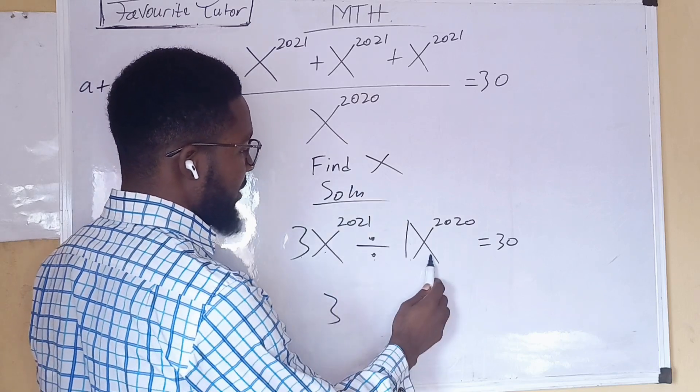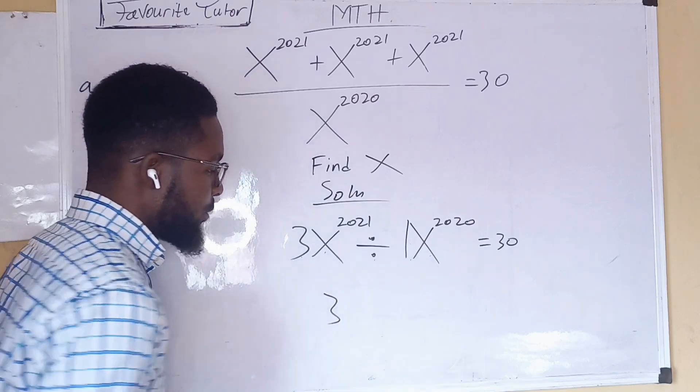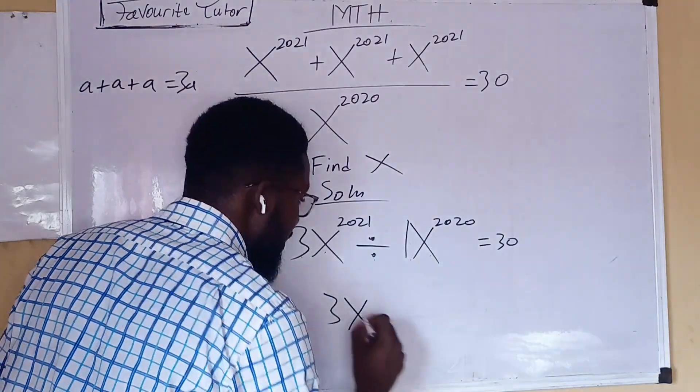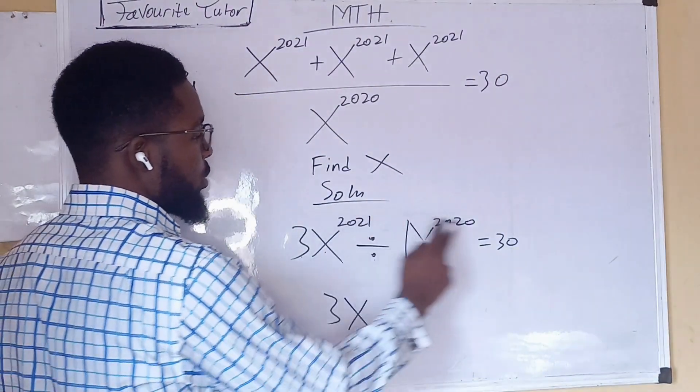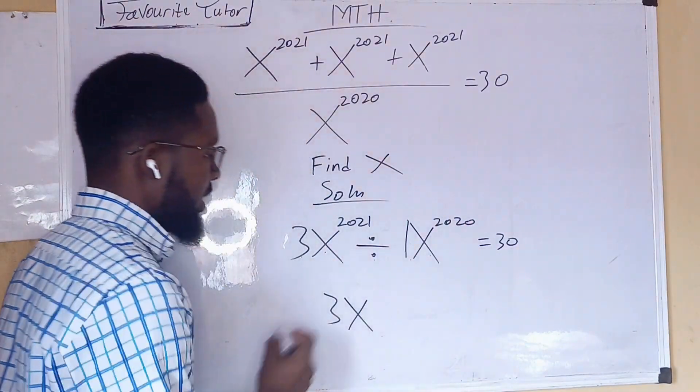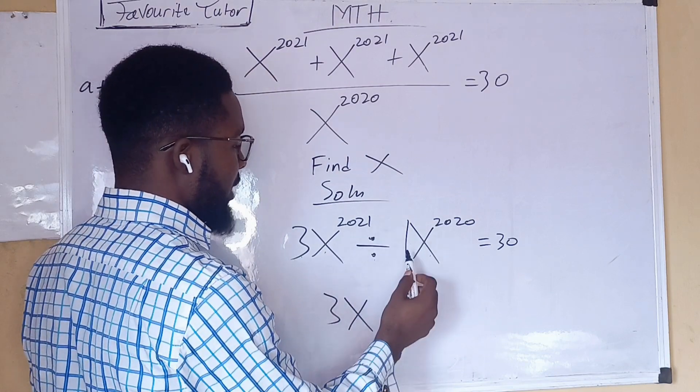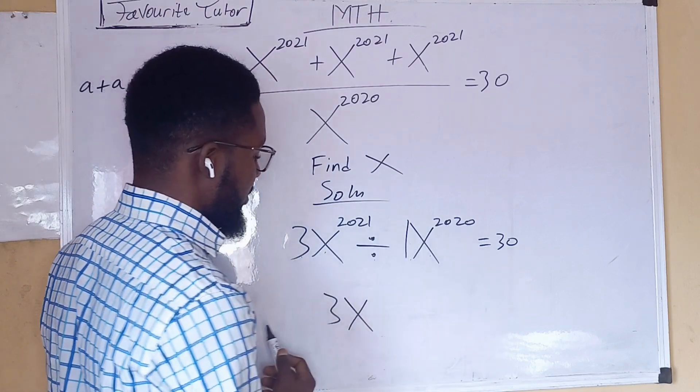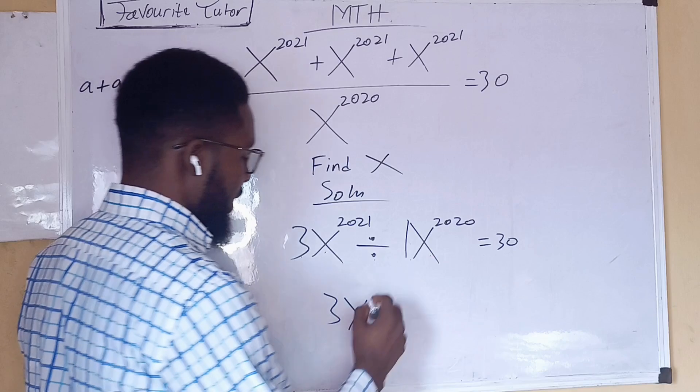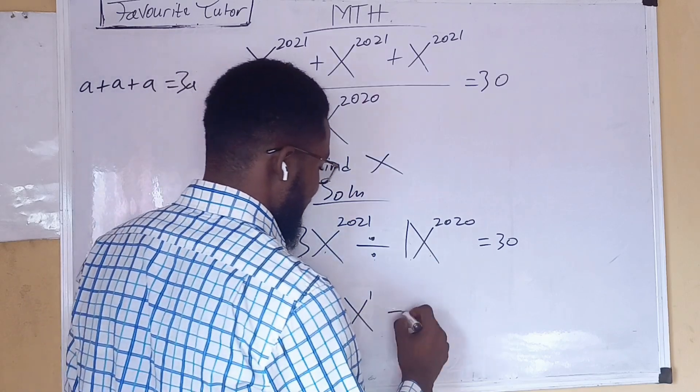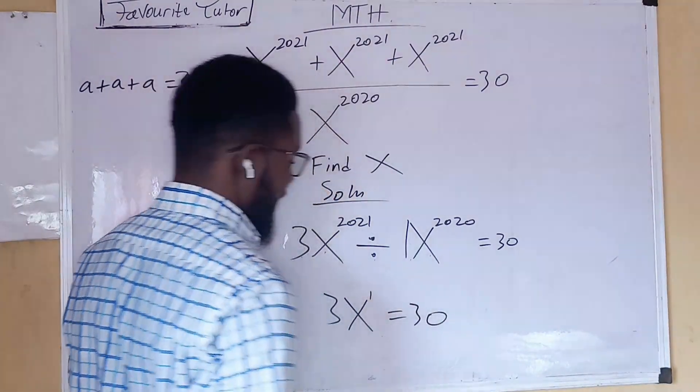So therefore, we have x here, we have x here. According to the law of indices, we pick one x and due to our division, we subtract the powers. 2021 minus 2020, what do we have? We have 1. So 3x^1 equals 30.